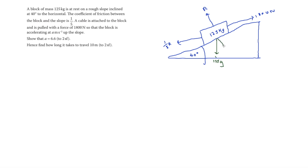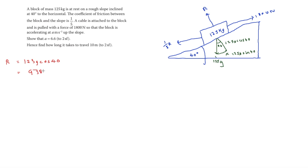We start by finding R, resolving perpendicular to the slope. R equals 125g cos 40, and using g equals 9.8, R equals 938.404 newtons.